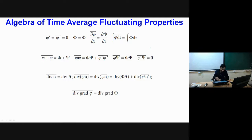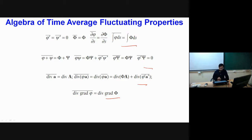For modeling of turbulence, as mentioned in the earlier lecture, we need to know some algebra of time-averaged fluctuating properties. The algebra which we need to calculate is given here, and after substituting the time-averaged definition of the quantity you can easily prove these relations. Using these relations we will modify our governing equations to include the effect of turbulence.